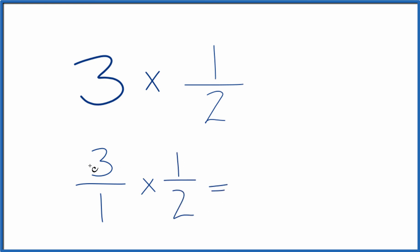and when we multiply fractions, we multiply the numerators, then the denominators. Three times one is three. One times two is two, which we just said is the same as the mixed fraction 1 and 1/2.